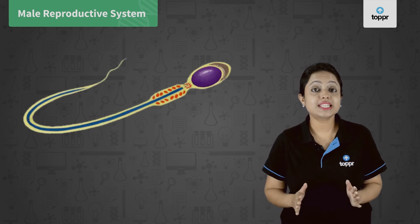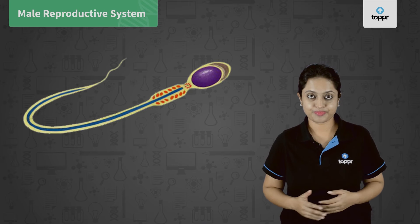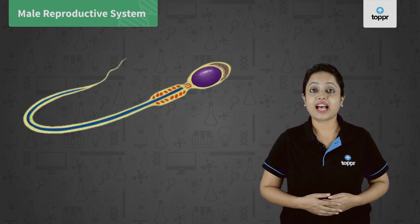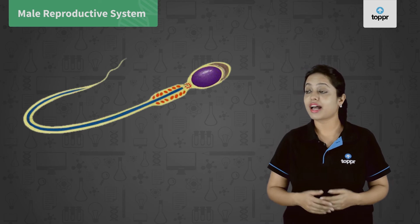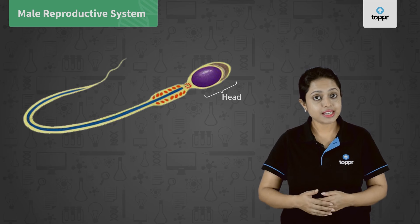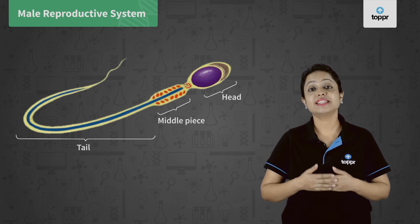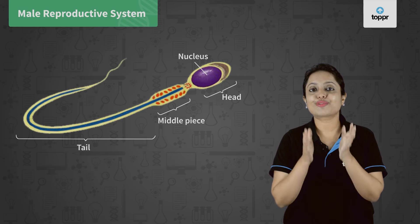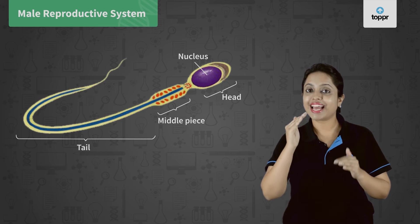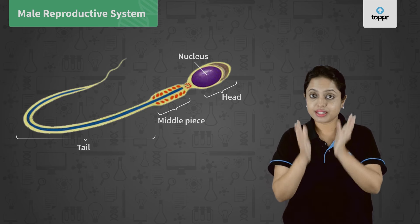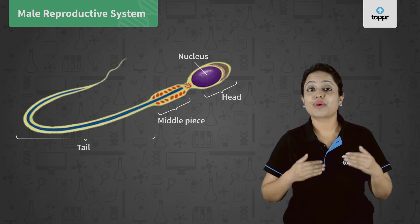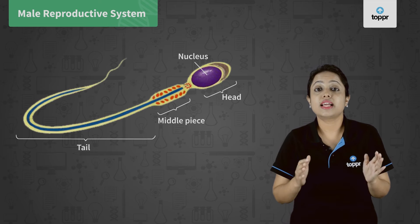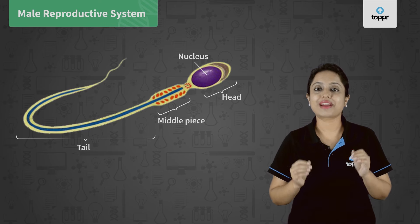Sperms are the smallest cells in the human body and mainly consist of genetic material. A sperm has three parts: head, middle piece, and tail. The nucleus of the sperm is present in its head. The middle region of the sperm provides the energy to swim, and the tail helps the sperm to swim rapidly.